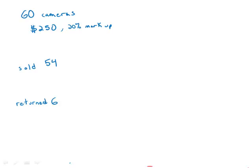A photography dealer ordered 60 Model X cameras to be sold for $250 each, which represents a 20% markup over the dealer's initial cost for each camera. Of the cameras ordered, six were never sold and returned to the manufacturer for a refund of 50% of the dealer's initial cost. What was the dealer's approximate profit or loss as a percent of the dealer's initial cost for the 60 cameras?